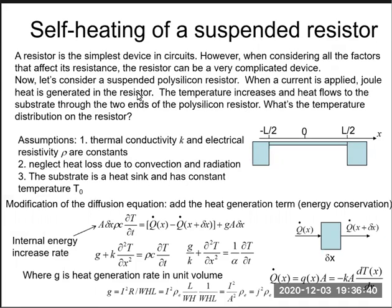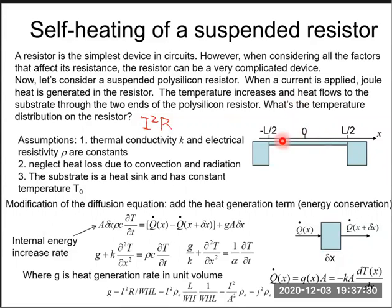Let's consider a suspended polysilicon resistor. We previously learned how to fabricate a polysilicon resistor using surface micromachining. When current is applied, heat is generated in the resistor because the heat equals I squared R — the power generated by the current. The temperature must increase, and heat flows to the substrate through the two ends of the polysilicon resistor.